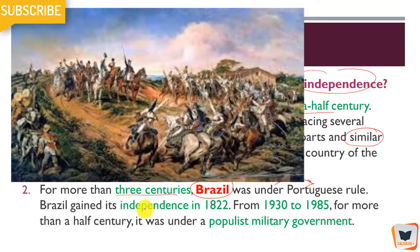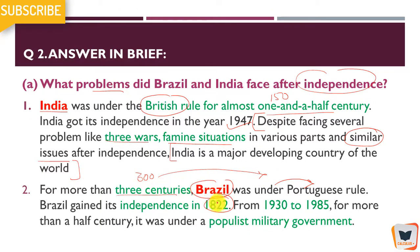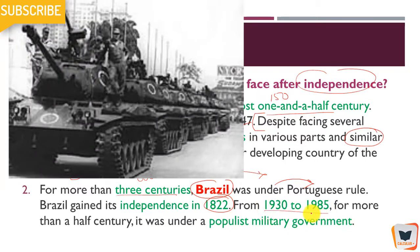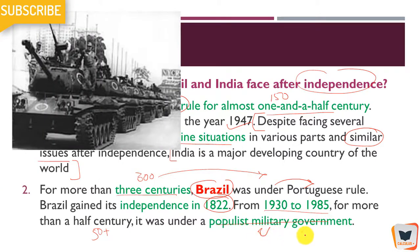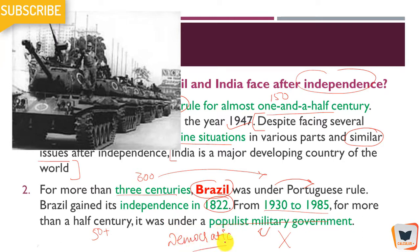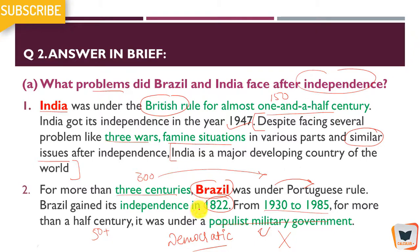For more than three centuries, Brazil was under Portuguese rule. Brazil gained independence in 1822. From 1930 to 1985, Brazil had a populist military government for about 50 years. Under a military government there is no freedom of speech and expression, no liberty, and a lot of conflict. The military government created a lot of havoc in people's lives. That's why after 1985, Brazil also became a democratic country. Both Brazil and India faced these difficult situations after their independence.